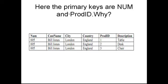Here is another example showing how to find primary keys. The primary keys here are num and product ID. Customer name depends on num — if we know the number, we know the customer name, city, and country. But if we know only num, we don't know the description or product ID, so we need another primary key. If we know the product ID, we also know the description — table, desk, and chair correspond to product IDs 1, 2, and 3 respectively. So the primary keys are num and product ID.